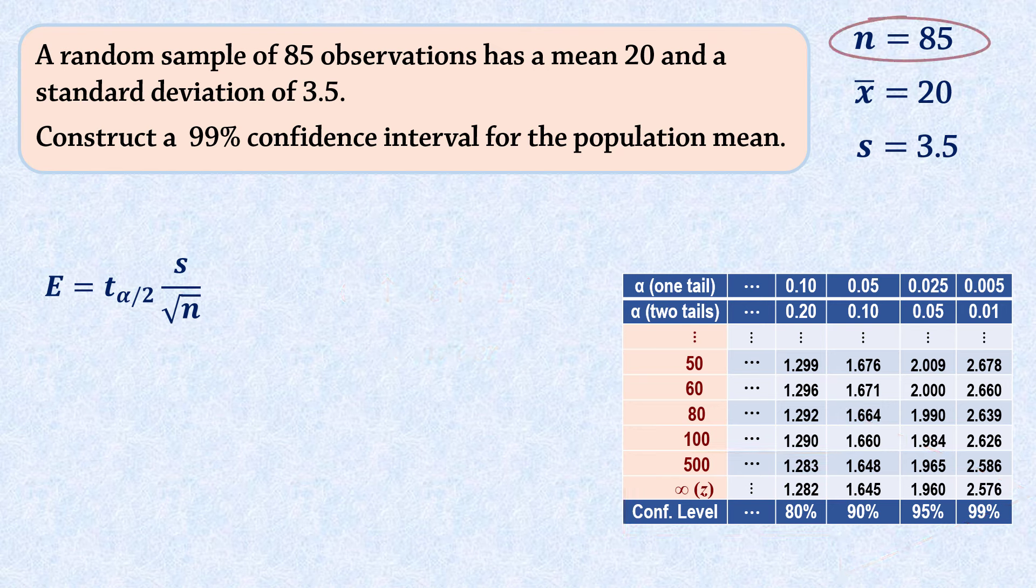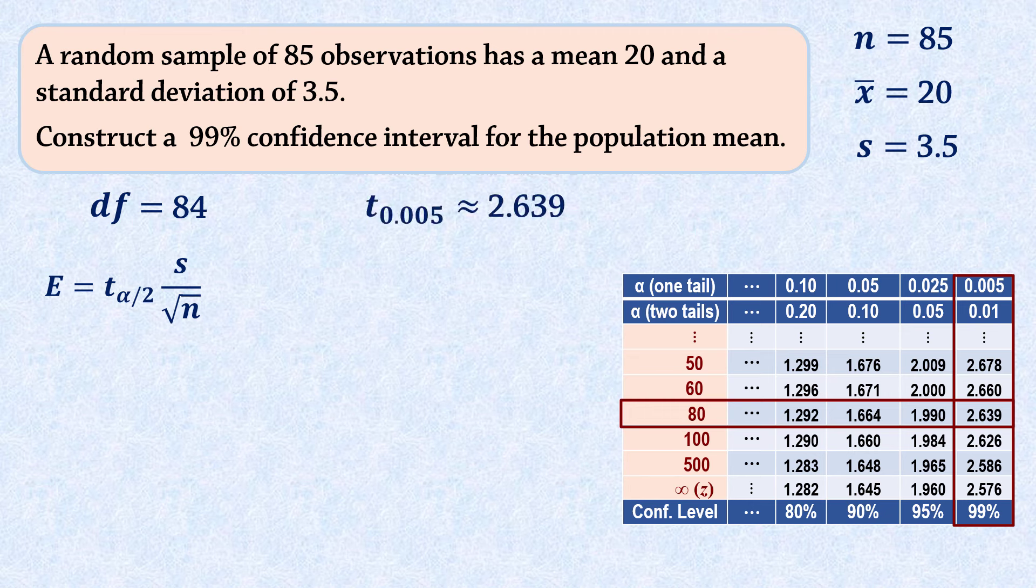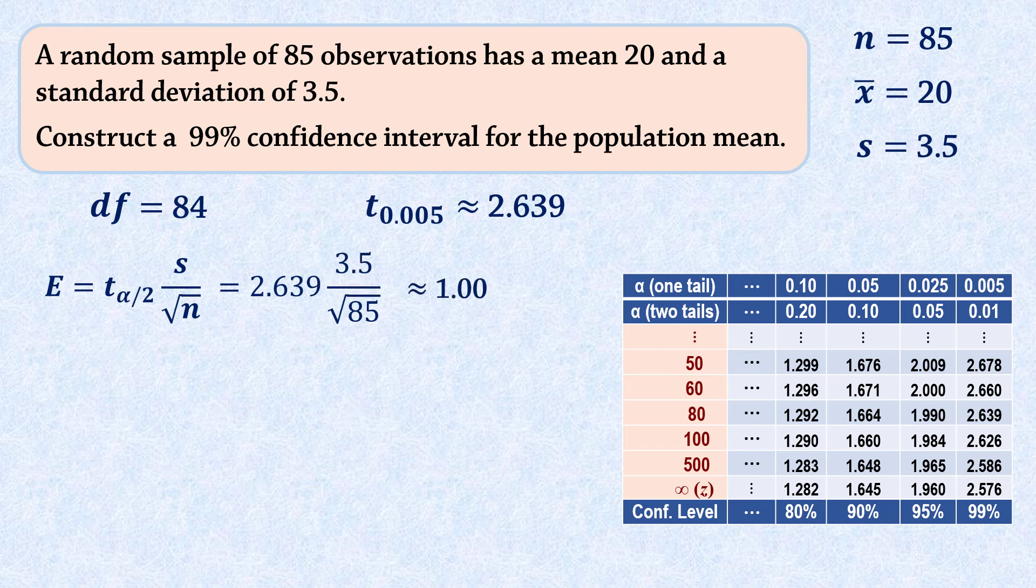With n equals 85 in this example, we have degrees of freedom n minus 1 equals 84. Now, note that most tables will not have degrees of freedom 84 on them, so you can use software if applicable. Otherwise, you can use the closest degrees of freedom available in the table. At 99% confidence level with DF equals 84, the closest DF here is 80 with a critical value of 2.639, which we will use here. The margin of error is therefore about 1.00, and the 99% confidence interval will be from 19 to 21.